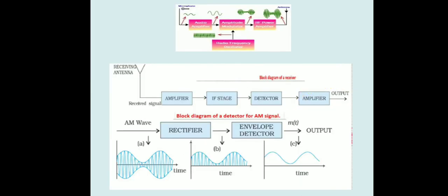If you consider the block diagram of the amplitude modulated system, it consists of an audio amplifier, an amplitude modulator with a radio frequency oscillator, then an RF power amplifier and antenna. At the reception side, for demodulation it consists of an amplifier, IF stage, detectors, and then amplification.